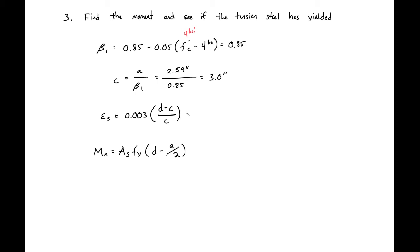We can then check our strain in our steel to see if we're yielded and see if we're tension controlled. So we'll have 0.003 times D, which is 16 inches minus 3 divided by 3. And we'll see that our steel strain is 0.0128. So we're above our tension control limit. So we know we're okay, we're tension controlled.